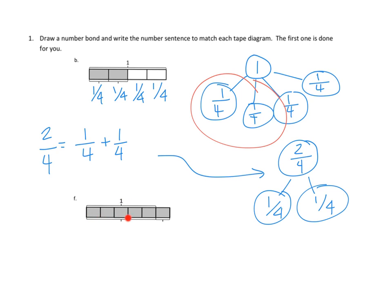We've got a 1, and does that make up the whole tape diagram? No, it actually only makes up these first 5 pieces. So it looks to me like we've divided a whole into 5 pieces, so each of those pieces looks like they would be 1/5. I think that would be 1/5 plus 1/5 plus 1/5 plus 1/5 plus 1/5, and then there's actually a 6th 1/5. So actually there are 6 of those pieces. Each of the pieces is 1/5, but there are actually 6 pieces for a total of 6/5.